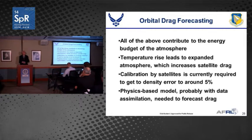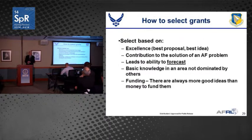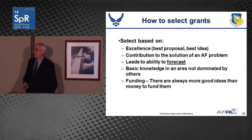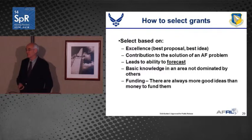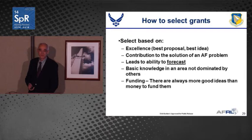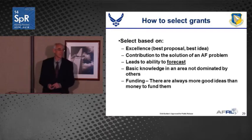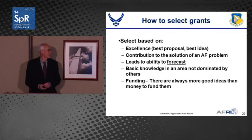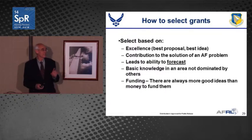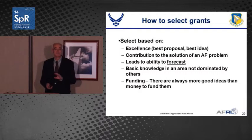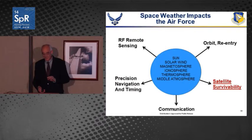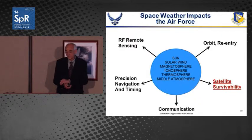Eventually we need a physics-based model good enough to predict the atmosphere to the required approximately 5% accuracy. In terms of how I select grants: mainly you look for the best ideas, though there are always more good ideas than money to fund them. Other agencies like NSF and NASA have deeper pockets than I do, so I'm looking mainly for forecasting projects that lead to our ability to forecast in areas important to the Air Force. Moving on to the next category: satellite survivability.